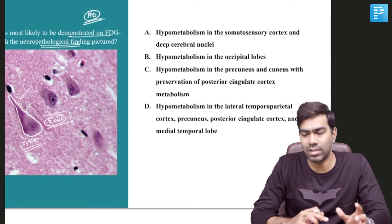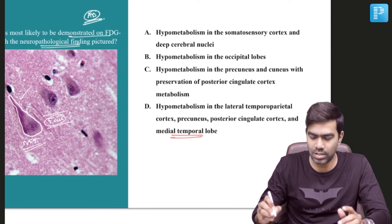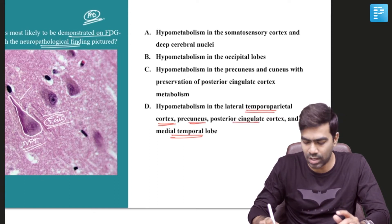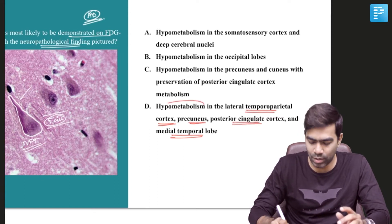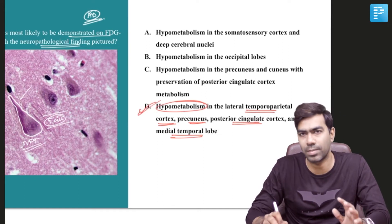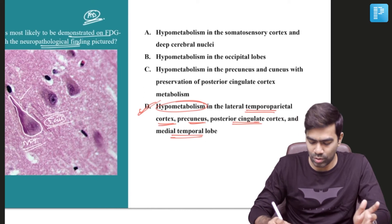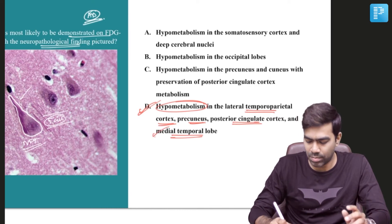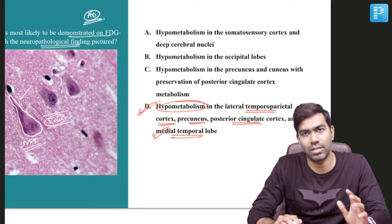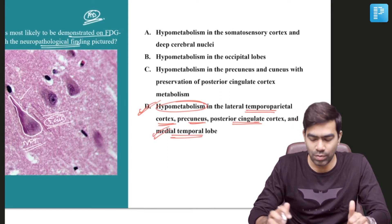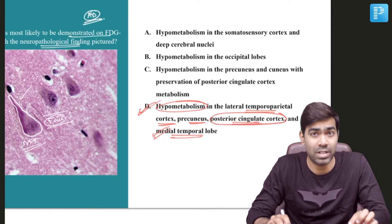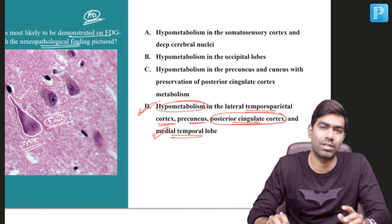Alzheimer's disease involves the medial temporal lobe, lateral temporal parietal cortex, precuneus, and posterior cingulate cortex — and that is where you are going to see hypometabolism on FDG PET. Many people know that medial temporal involvement, especially the entorhinal cortex and hippocampus, is very common in Alzheimer's disease. But very few know that involvement of the posterior cingulate cortex is very specific for the diagnosis of Alzheimer's disease.